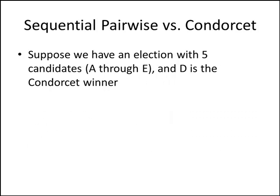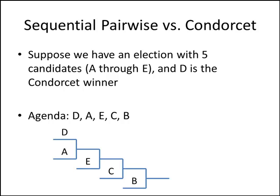Let's suppose we had an election with five candidates, call them A through E, and let's say that D is the Condorcet winner. I want to explain why D will be the sequential pairwise winner no matter what agenda we use. Let's try the agenda D, A, E, C, B. We can set up our tournament brackets. Since D is the Condorcet winner, it defeats all opponents in one-on-one matchups. So in the first round, D beats A; in the second round, D beats E; then D beats C and D beats B. D will win all of these one-on-one elections, and so D will be the sequential pairwise winner.